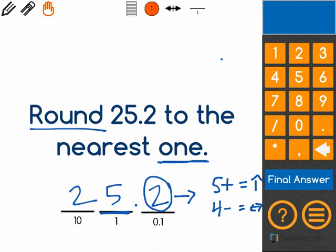In this case, we have two, which is definitely four or below, so the number five will stay the same. We have 25, and since we're rounding to the nearest one, that means we will not be writing a number after the ones place. So five will be the last digit we write.